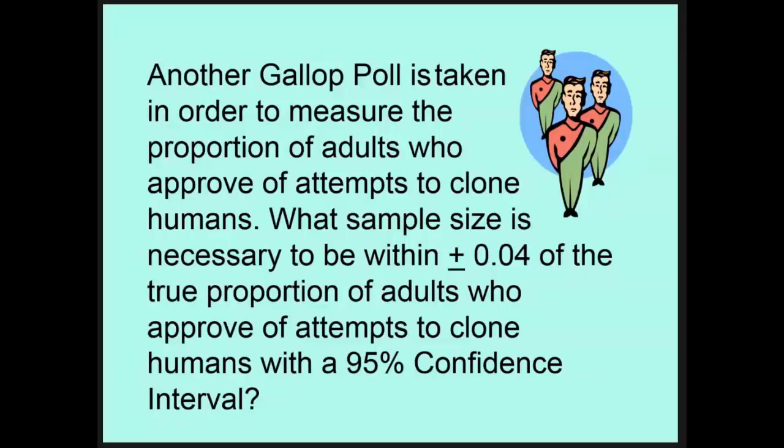Another Gallup poll is taken to measure the proportion of adults who approve attempts to clone humans. That's interesting. What sample size is necessary to be within .04 of the true proportion of adults who approve of attempts to clone humans with a 95% confidence interval?